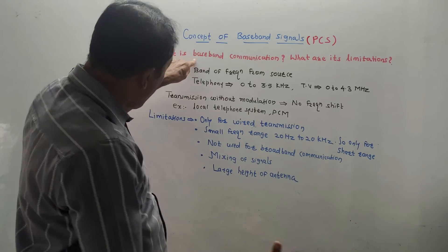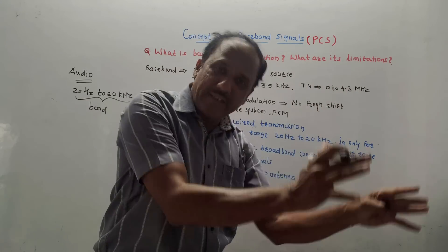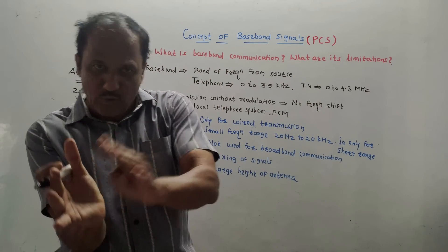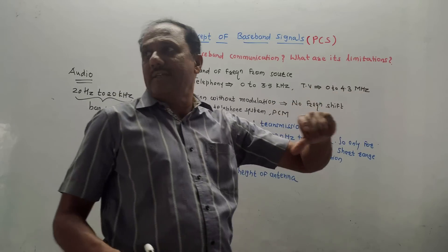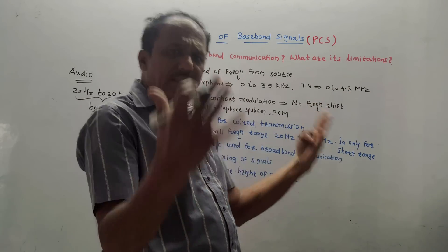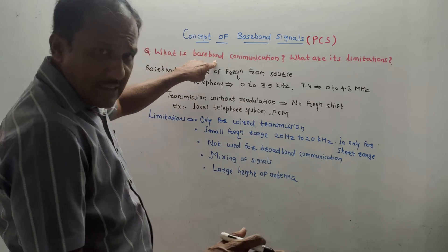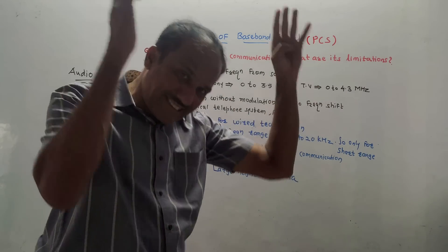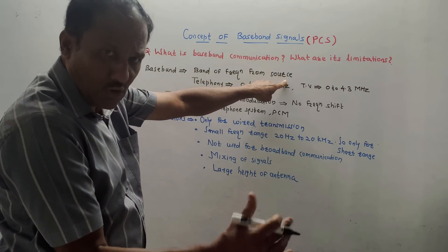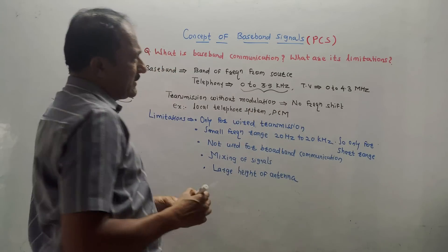Baseband means the band of frequencies transmitted from the transmitter end. In simplified communication, one side has a transmitter, there is some medium such as coaxial cable or fiber optic cable, and at the other end is a receiver. Baseband is defined as the band of frequencies sent from the source or transmitter.